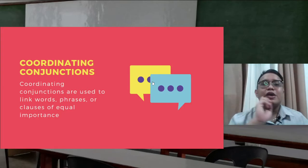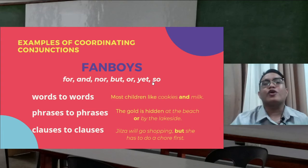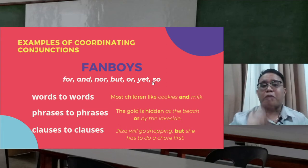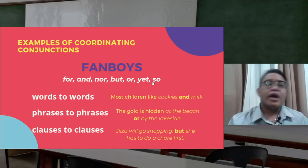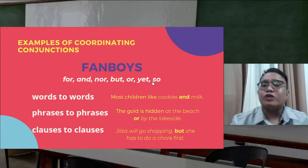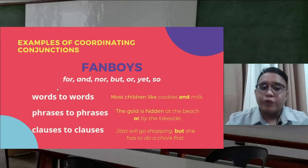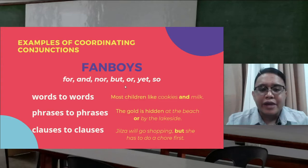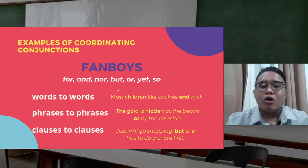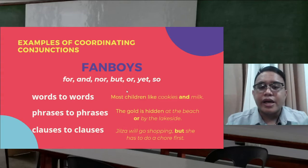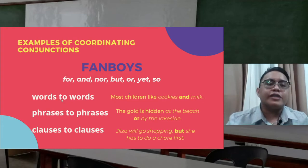FANBOYS stands for: For, And, Nor, But, Or, Yet, and So. Conjunctions connect words to words, phrases to phrases, and clauses to clauses. For example, words to words: 'Most children like cookies and milk' — the conjunction here is 'and,' connecting 'cookies' and 'milk.'